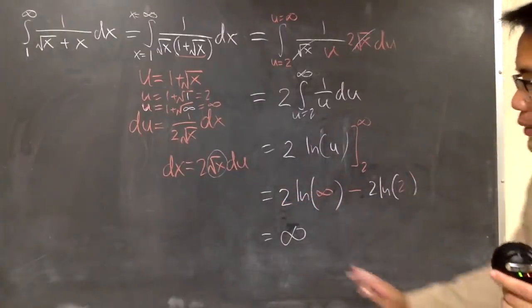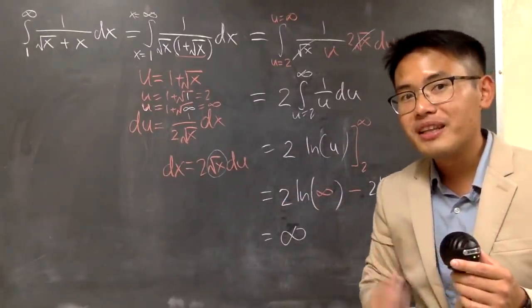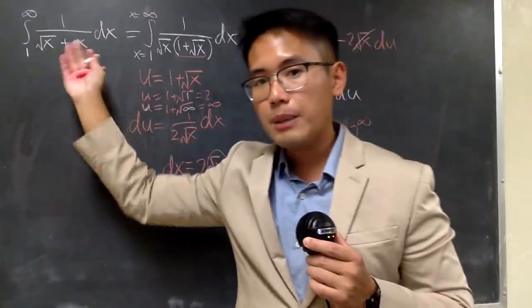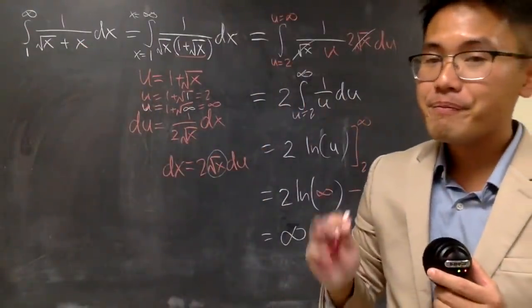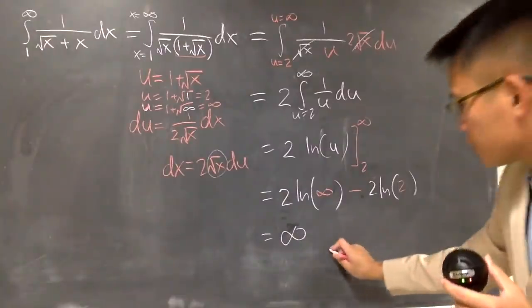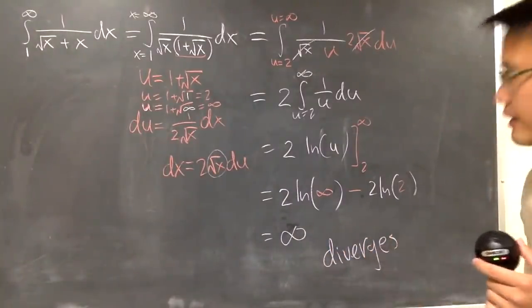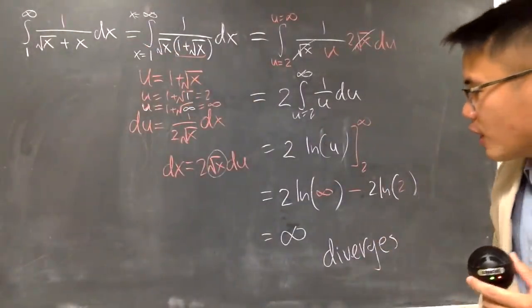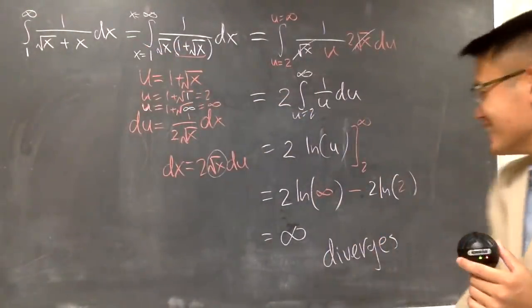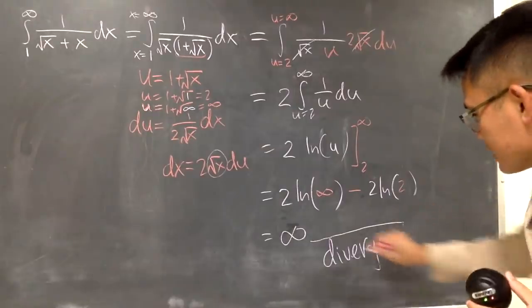Infinity minus a finite number, you get infinity. So, in another word, this improper integral actually diverges. I will just write this down for you guys. This right here, diverges. How do we know? Because we did the work. So, this is how we can do it as well.